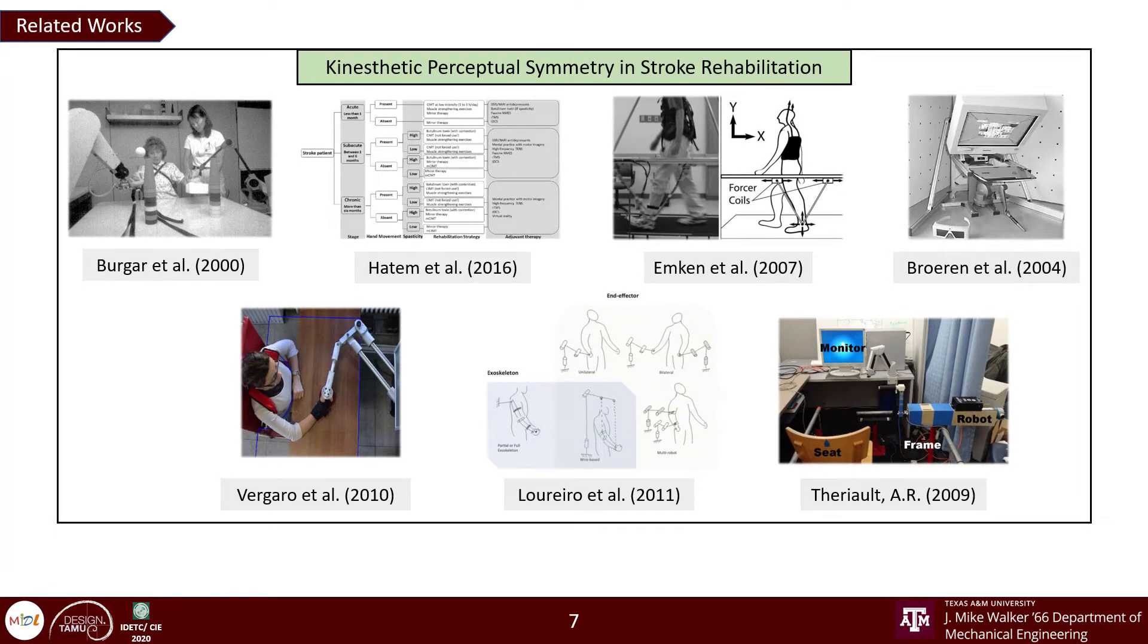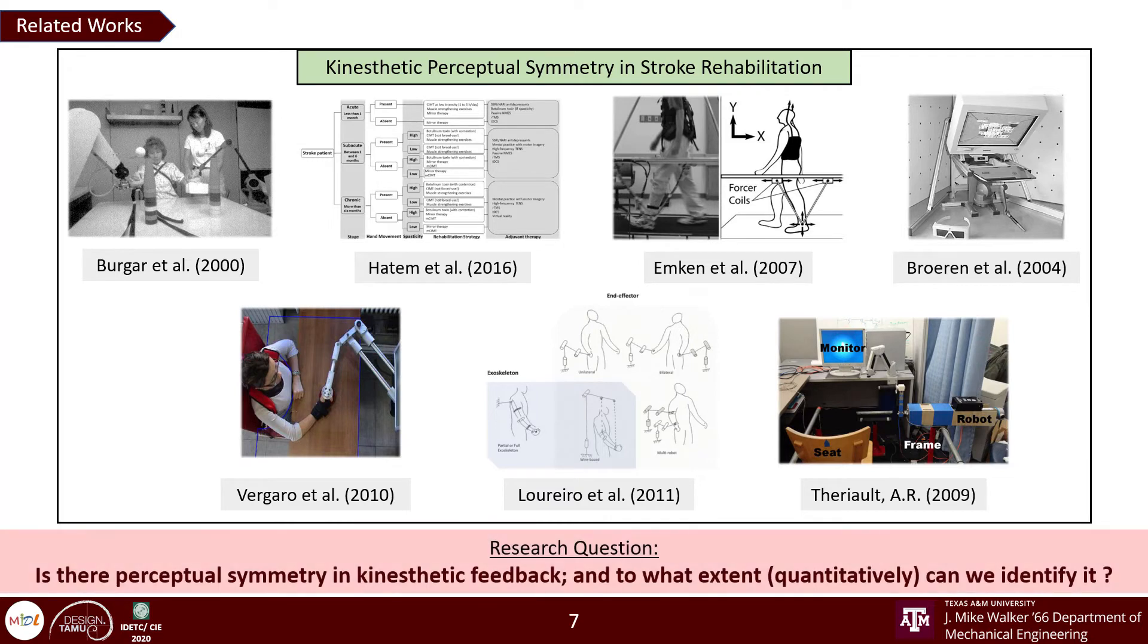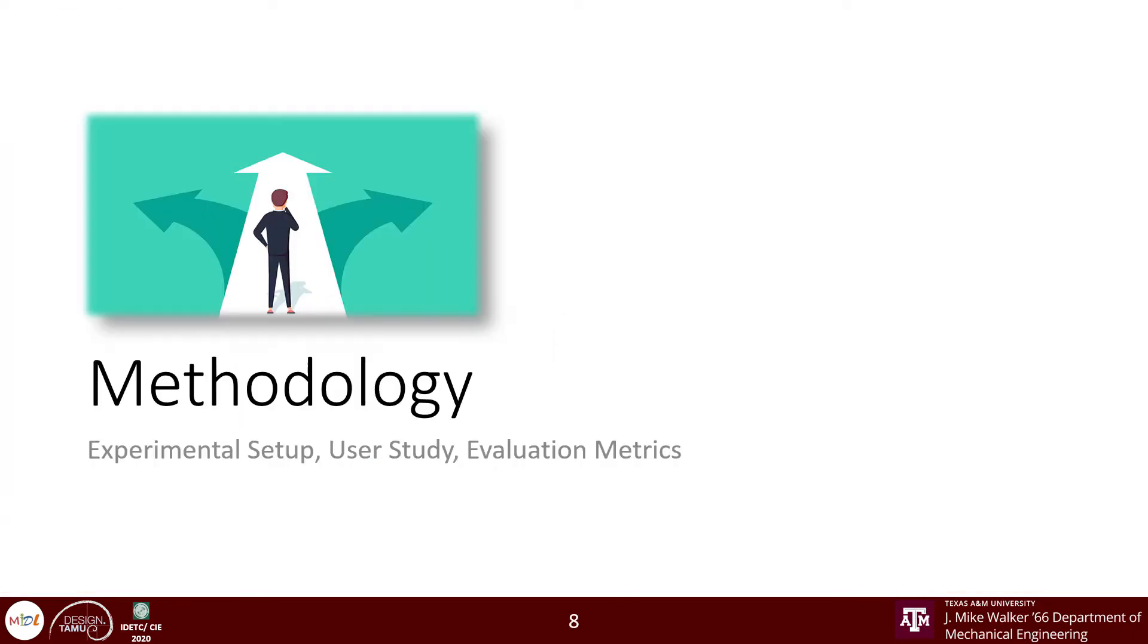While prior works have discussed the existence of kinesthetic perceptual symmetry in our daily actions, it is primarily in a qualitative sense. The research question that we are trying to answer in our work is: is there perceptual symmetry in kinesthetic feedback and to what extent can we identify it? Therefore, we conduct a very simple experiment.